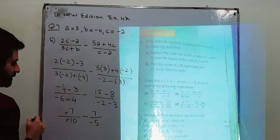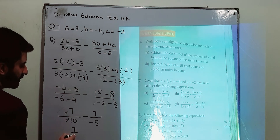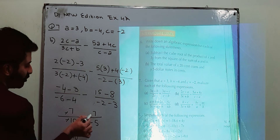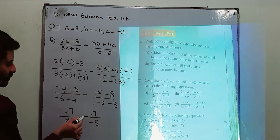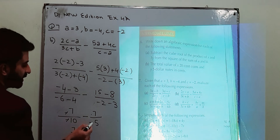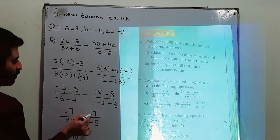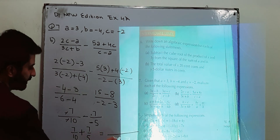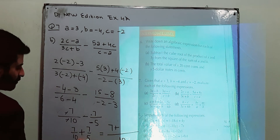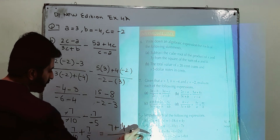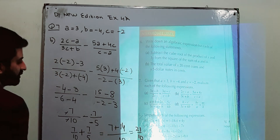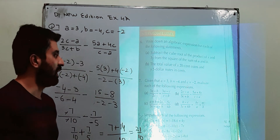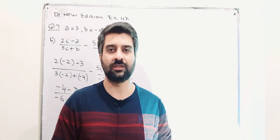You can cancel the negative signs: minus 7 over minus 10 becomes 7 over 10. The negative sign in the denominator is shifted to the numerator, making minus 7 become plus 7. Now take the LCM, which is 10. Multiply accordingly: 2 times 7 is 14, giving 21 over 10. This is the answer for question number 7, part B. I will upload the next part after this one — keep watching, thank you so much.